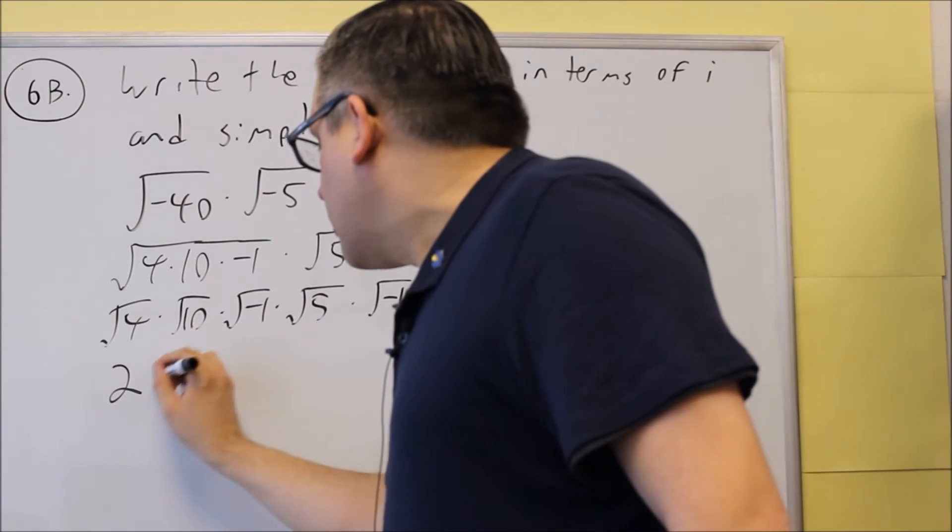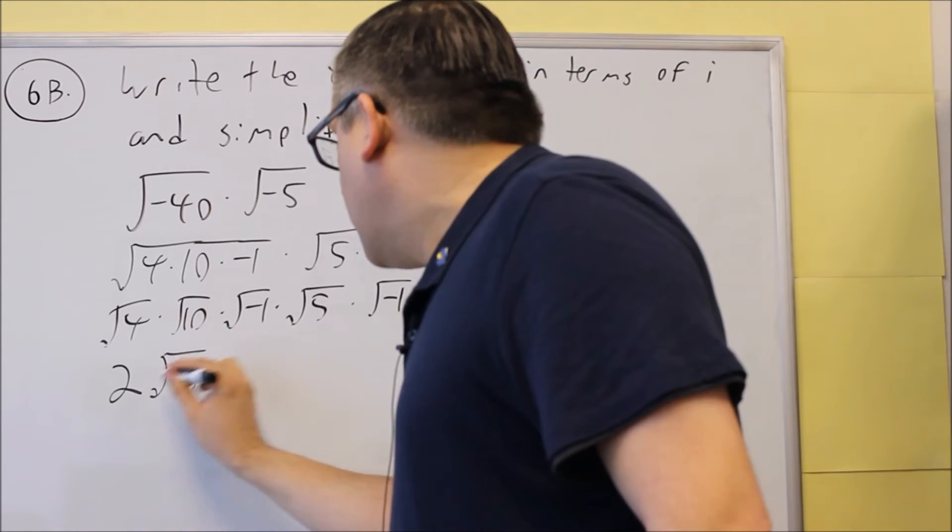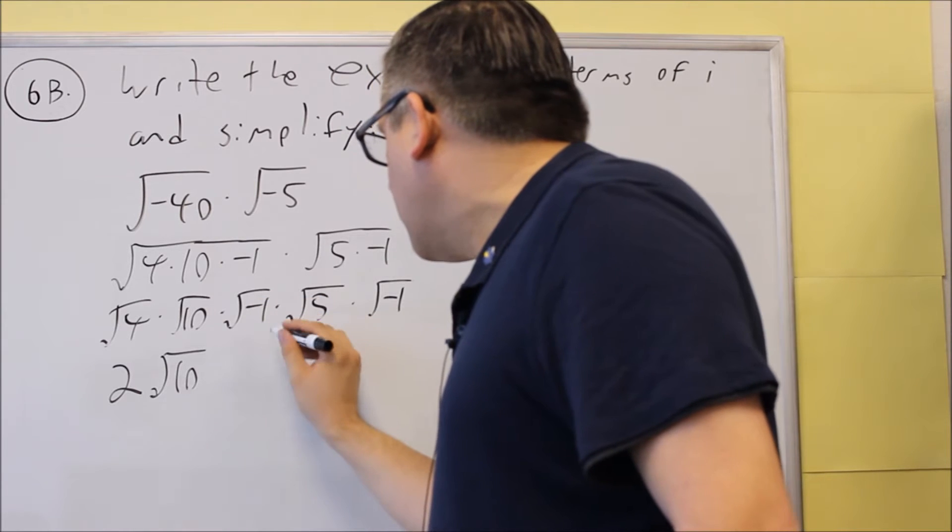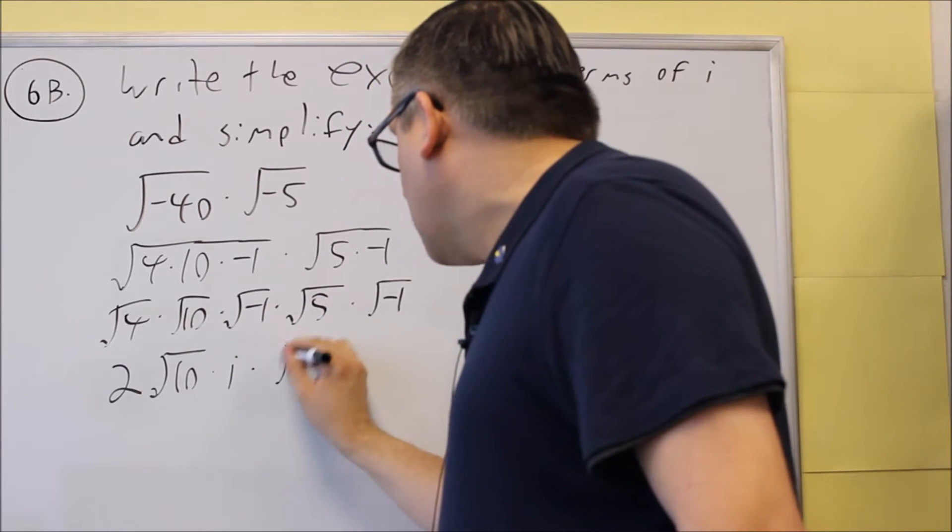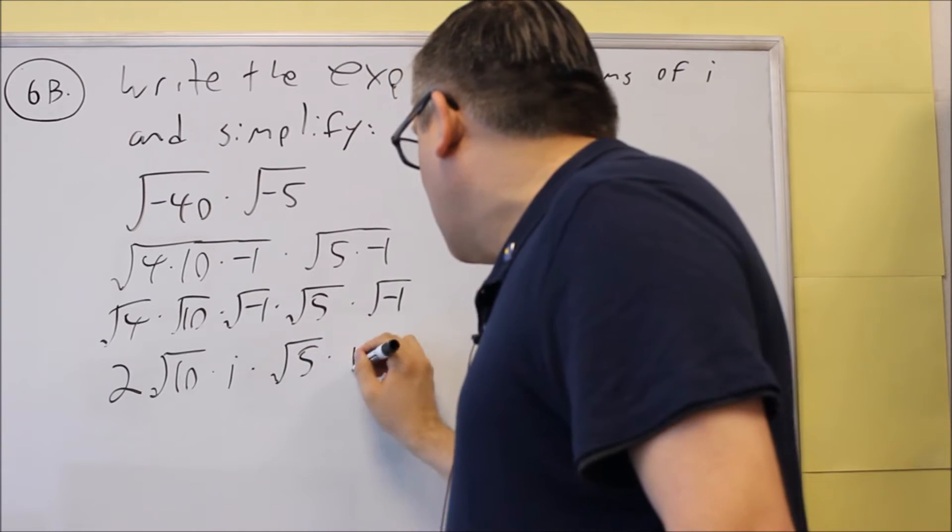Square root of 4 turns into a 2, and then the square root of negative 1, that's going to just be i's for both of those. So we have i, we have another square root of 5, and we have i.